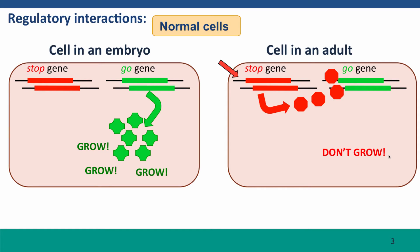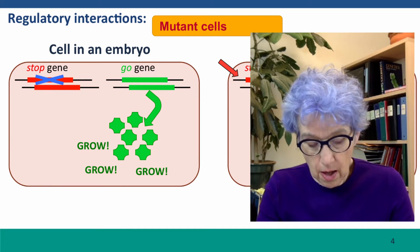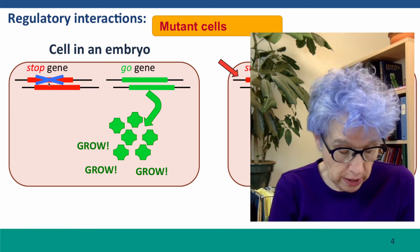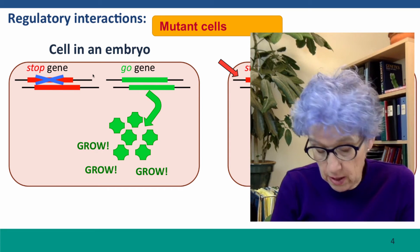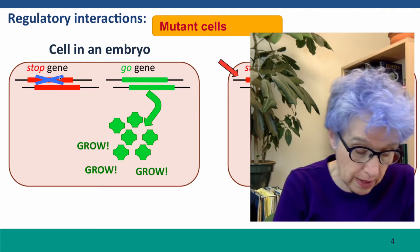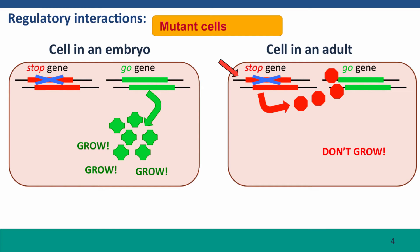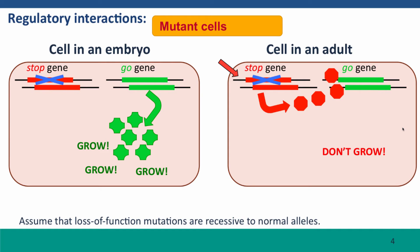Now we want to extend this to thinking about mutant cells. We can think about a single knockout mutation in one allele of the stop gene. What effect is it going to have in the embryo? Probably no effect at all, because our best guess is that it would be at least partially recessive. In the embryo, it doesn't really matter what the state of the stop gene is, because the stop gene is normally off in embryonic cells anyway — so it has no effect on phenotype. In adult cells, there's still one functioning copy of the stop gene, and that's probably enough to turn the go gene off so the cell doesn't grow. So again, we don't really expect any phenotypic effects from a single mutant allele.